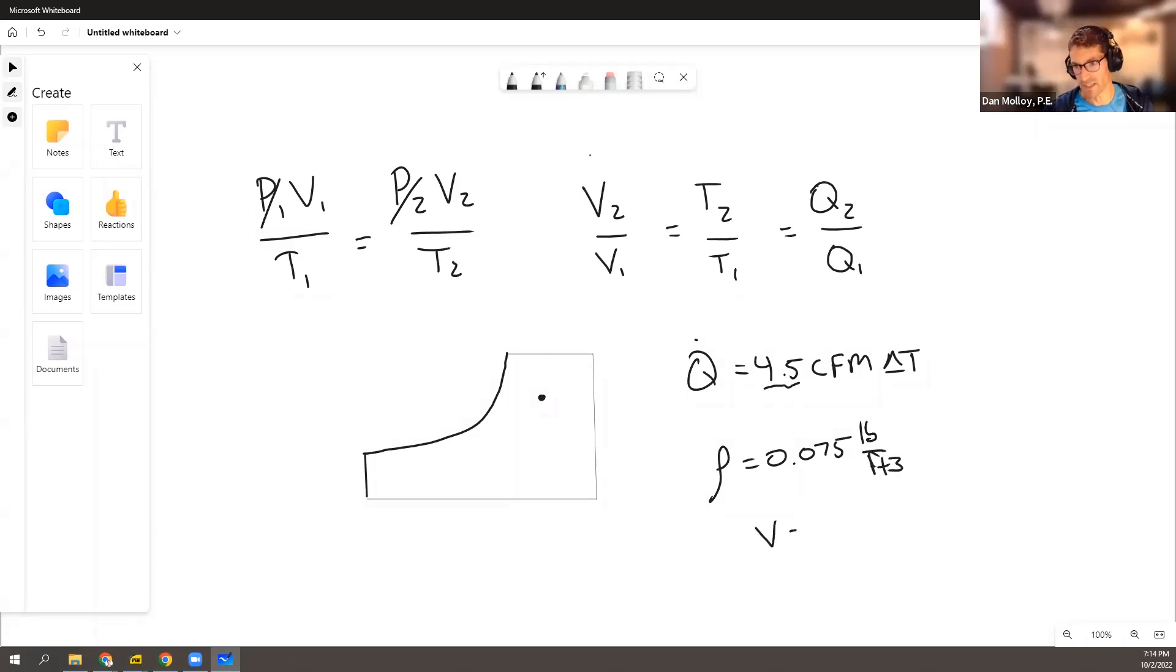Or to say the same thing, that the specific volume is 13.3 cubic foot per pound. And in this problem, there was a deviation.